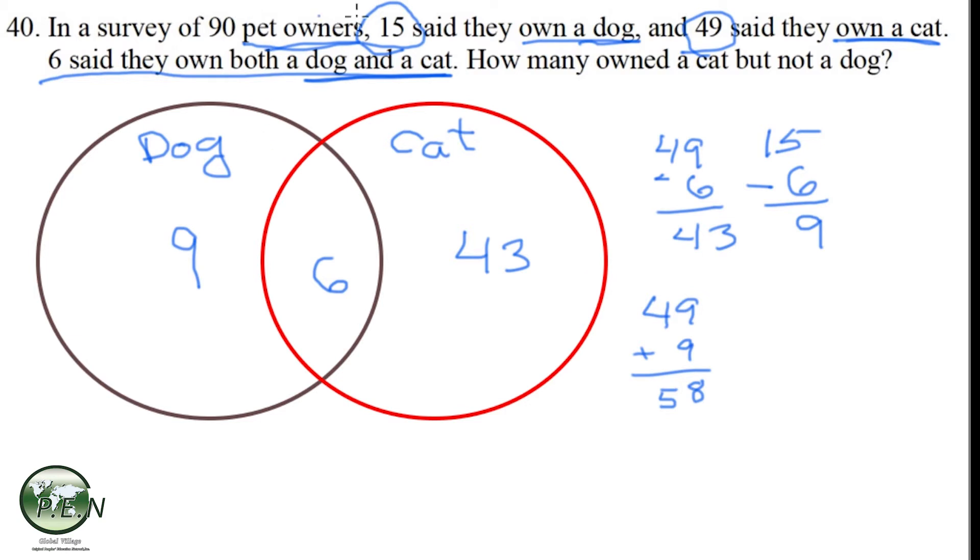We have 90 pet owners. We haven't counted for all of them. So then we take our 90 and subtract the 58 that we've accounted for.